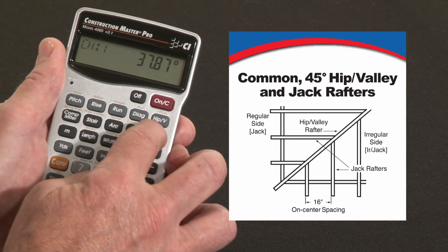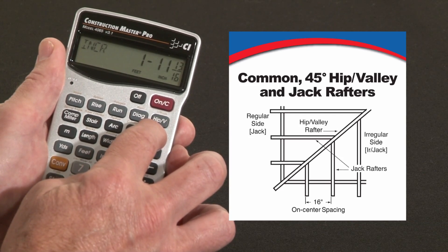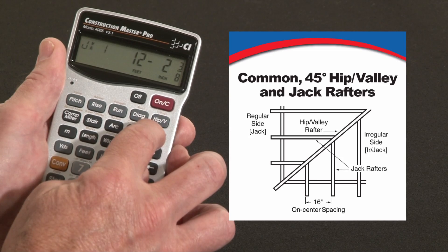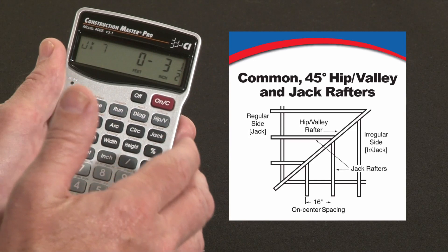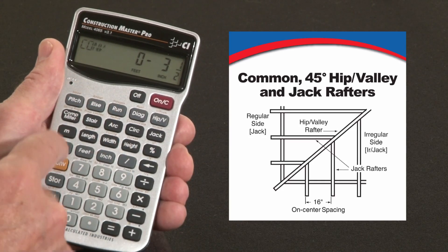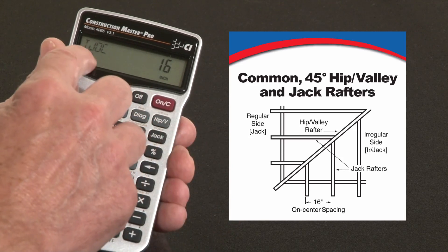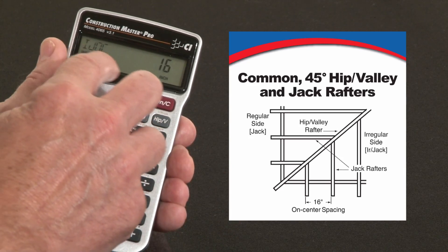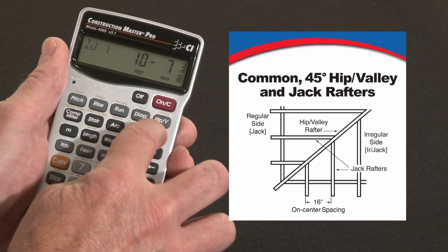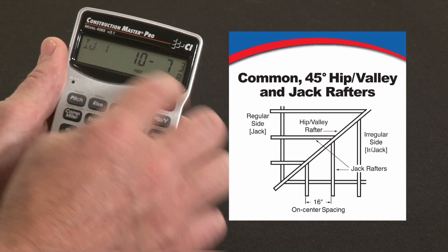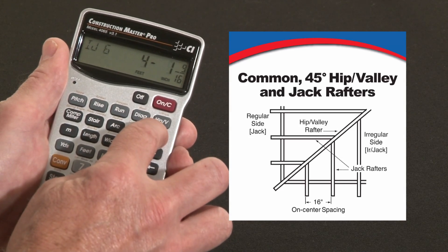Now I can also solve for all the jack rafters. Same on-center spacing, here's the incremental change, and here are all the regular jack rafter lengths all the way down to the corner. To get the lengths of the irregular side jack rafters, I hit Convert, and over the jack key it says irregular jacks. When I press the jack key, it shows the irregular jack on-center spacing — the same 16 inches we're using. Press it again and there's the increment of change, then it starts with irregular jack number 1 on down to the corner, giving the length of every single one of those jacks.